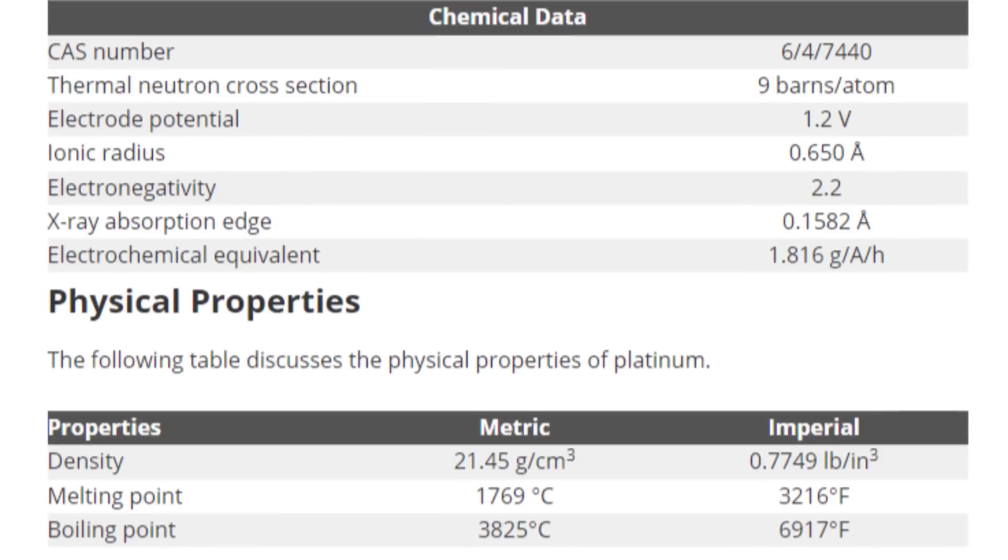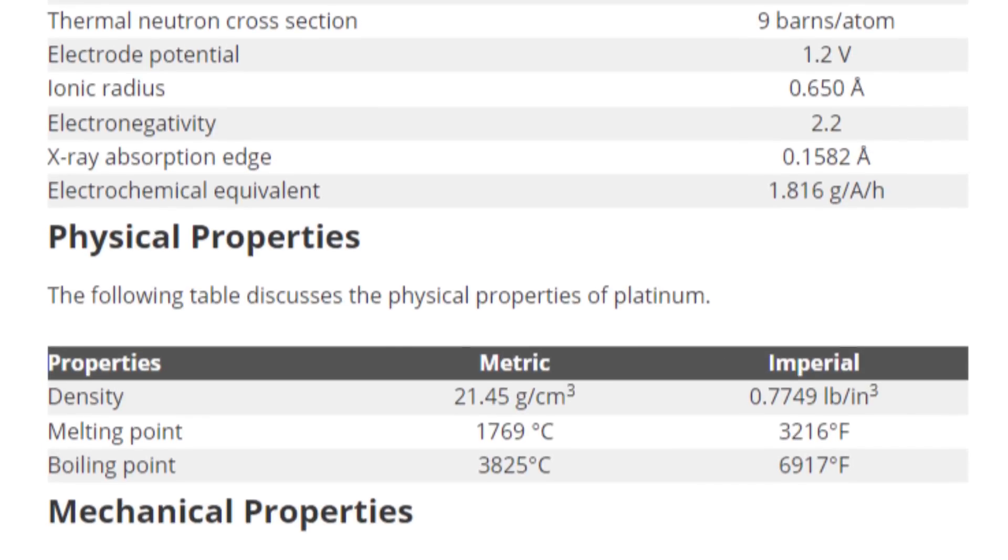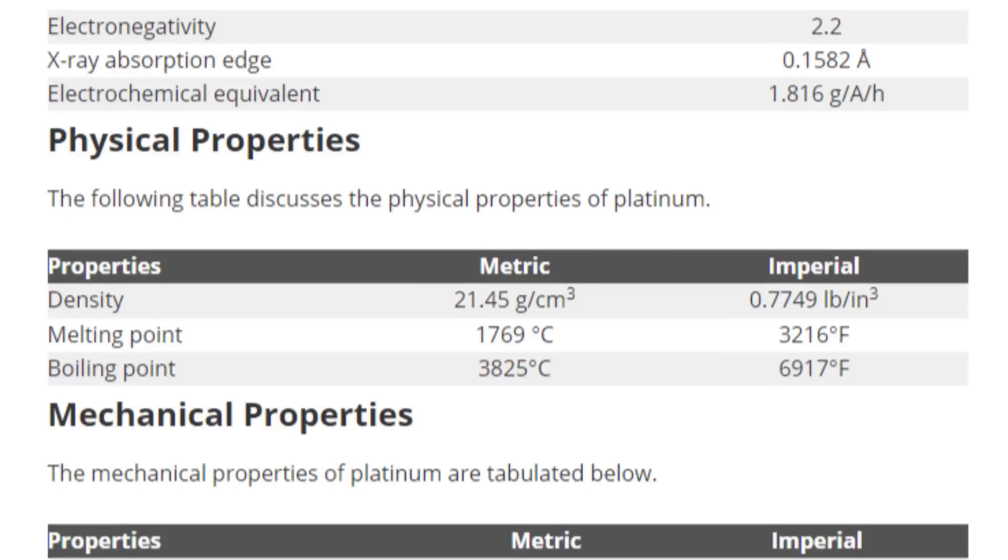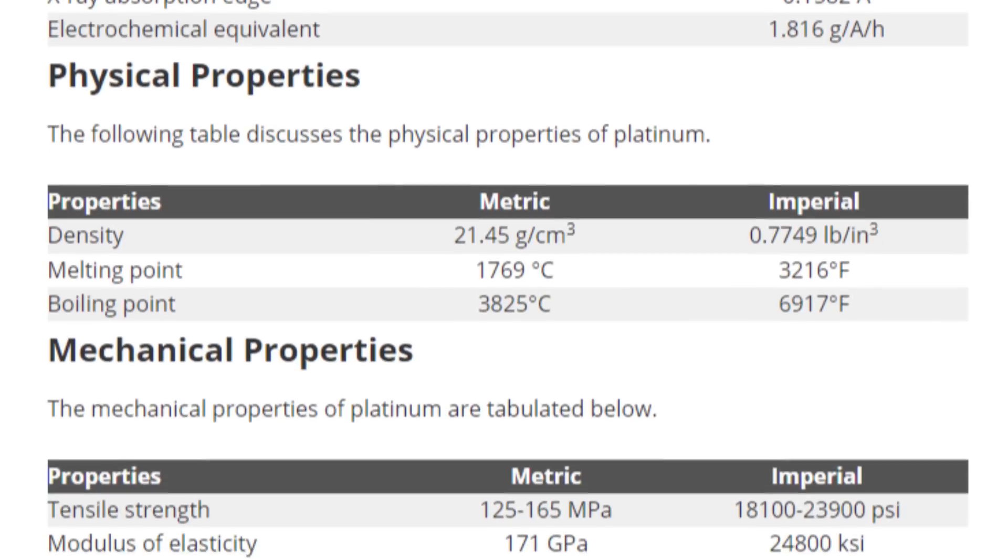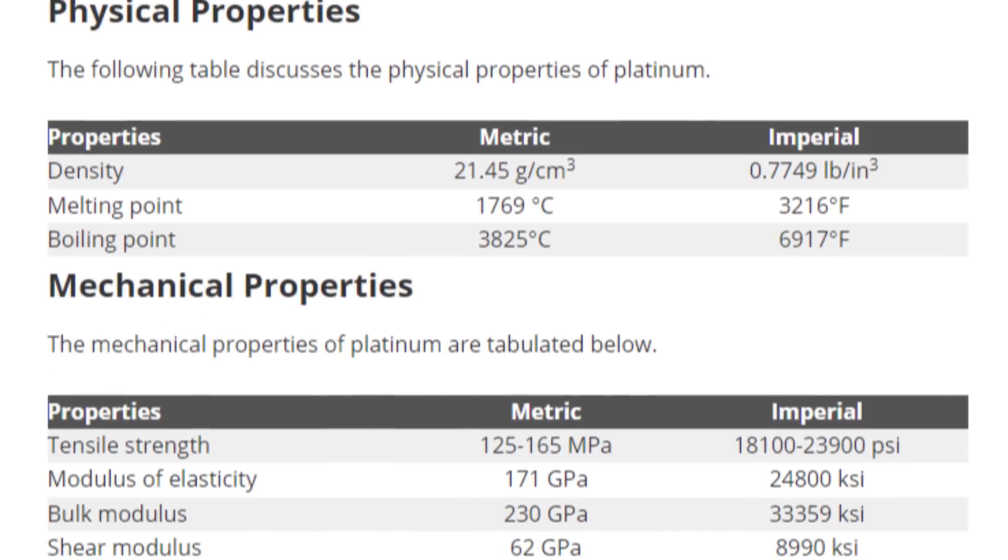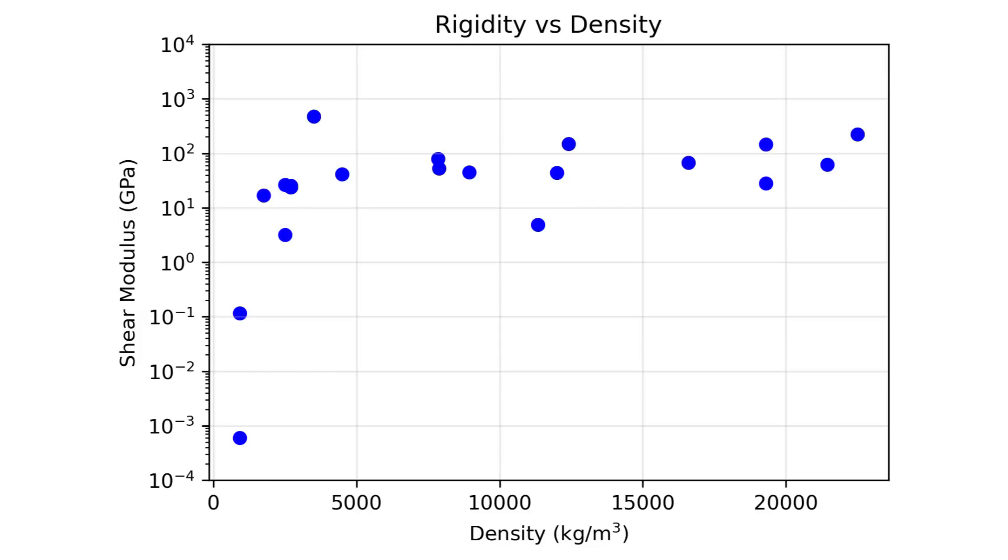So I just looked up a bunch of different materials on this website where it lists a bunch of their properties and plotted the densities against the shear modulus, or rigidity for a handful of them. And this is what it shows. As you can see, for lower densities, the rigidity increases really quickly. And after that, it kind of flattens out at around 100 gigapascals.